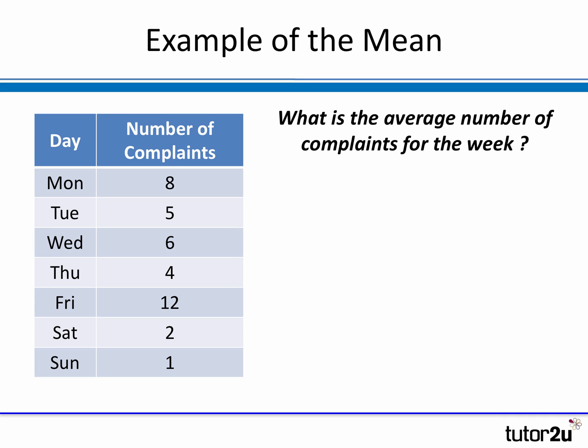Let's have a look at a simple example — a table that shows for a particular week the number of complaints received by a business. Monday there were eight complaints, Tuesday five, and so on. Looks like Friday was the worst day with 12 complaints, whereas at the weekend — Saturday and Sunday — just two and one complaint respectively. So there's our data. There are seven observations, Monday through to Sunday, and our data set is the number of complaints on each day.